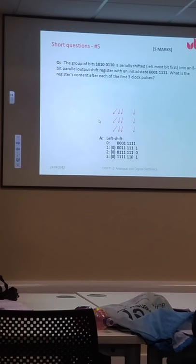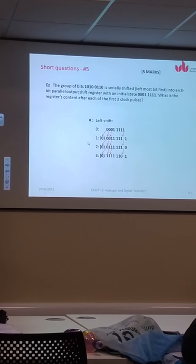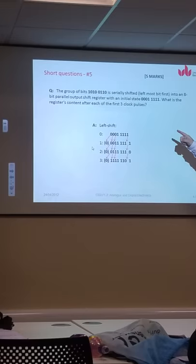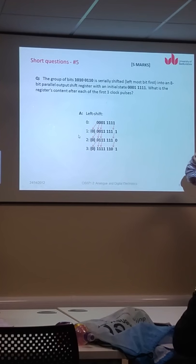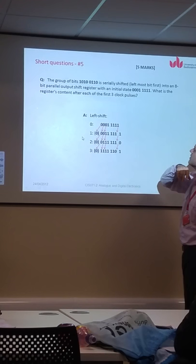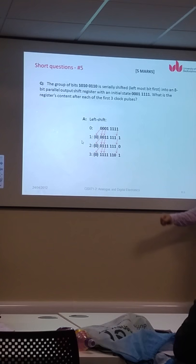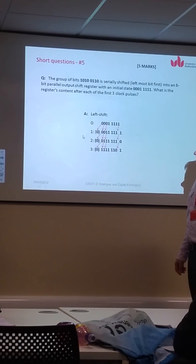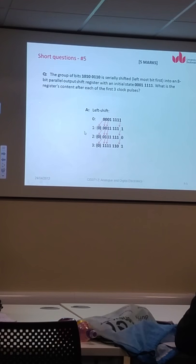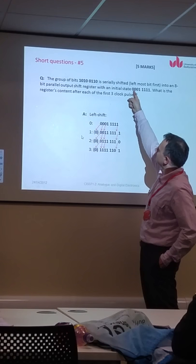Halfway to the... okay, shift registers. You can get such questions to work out a shift register in a particular case. So you are given a group of bits, whatever it is, 1010, 0110. It's serially shifted, leftmost bit first, so this is coming into the register, into an 8-bit parallel output shift register. You see it's 8-bit, there are 8 flip-flops in the register. It's a parallel output, apparently serially, because we are streaming bits serially in the register. And it already has a content. Initial state is this.